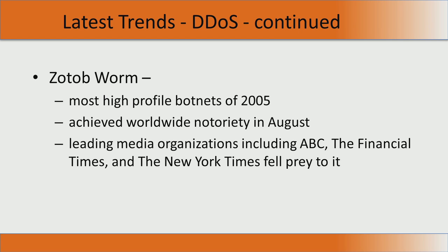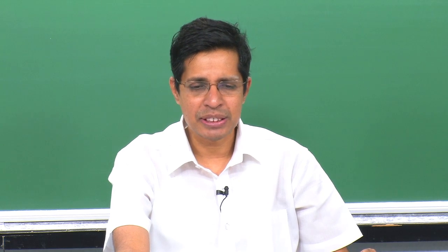Some of the early DDoS attacks include the Zotov worm, which came in 2005 and achieved worldwide notoriety in August of that year. Leading media organizations including ABC, Financial Times, and the New York Times actually fell prey to it. This was one early distributed denial of service attack.